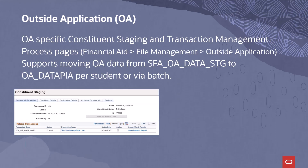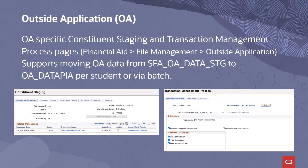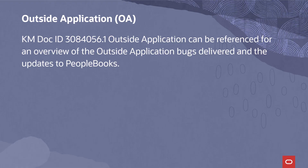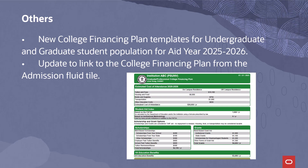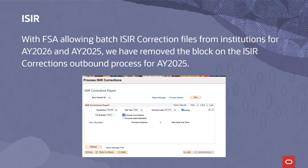We have delivered OA-specific constituent staging and transaction management process pages under the Financial Aid File Management Outside Application folder to support moving the OA data from SFA_OA_OA_DATA_STAGE to OA_DATA_PAA on a per-student basis or via batch. KM doc ID 3084056.1 Outside Application can be referenced for an overview of the outside application bugs delivered and updates to PeopleBooks. We delivered new college financing plan templates for the undergraduate and graduate student populations with new specifications for award year 2025-2026, and delivered the needed update to link the college financial plan from the admission fluid tile. With FSA allowing batch ISA correction files from institutions for award year 2026 and 2025, we have removed the block on the ISA corrections outbound process for award year 2025.